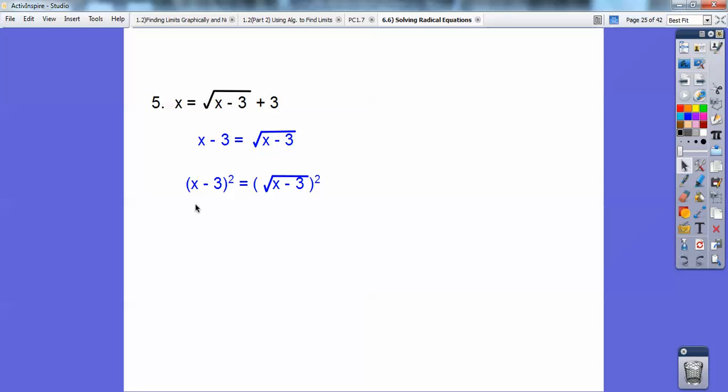Now when I have a binomial and I'm squaring it, I've got to foil it out, x minus 3 times x minus 3. Over here, this just makes the radical disappear, so it just equals x minus 3. Can you see where if I foiled out x squared, x minus 3 times x minus 3, I get this right here.